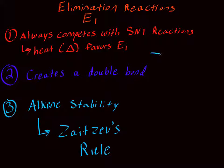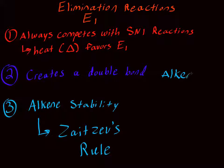Depending on what base we're adding to the system, you might see delta written underneath. That's how we favor elimination — we add heat. The whole purpose of elimination is that we are creating a carbon-carbon double bond, so we're creating an alkene. We can create many types of alkenes, and certain alkenes are better than others. We use Zaitsev's rule, which is what I'm going to talk about next.